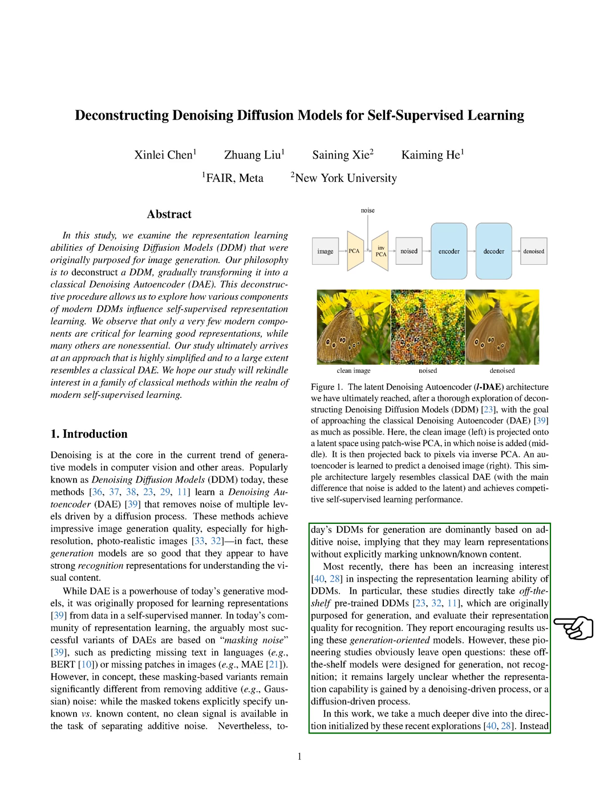Despite this, today's DDMs for generation are mostly based on additive noise, suggesting that they can learn representations without explicitly marking what's known and unknown. Recently, there's been a growing interest in studying the representation learning ability of DDMs. Some studies have taken pre-trained DDMs, which were originally designed for generation, and evaluated their representation quality for recognition. They've found promising results using these generation-oriented models.